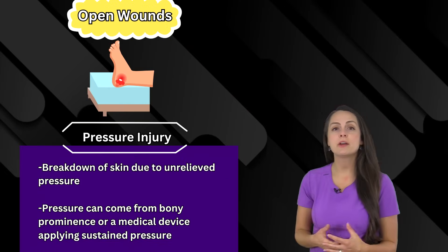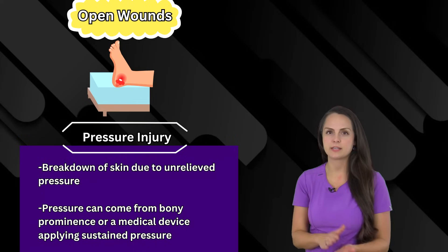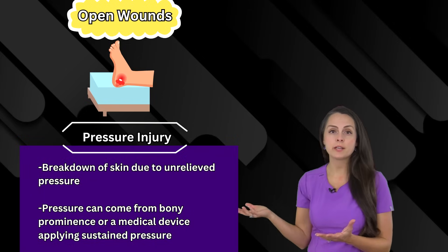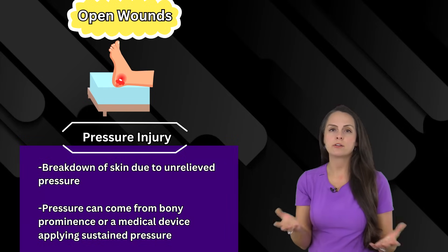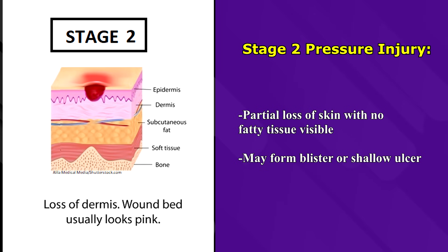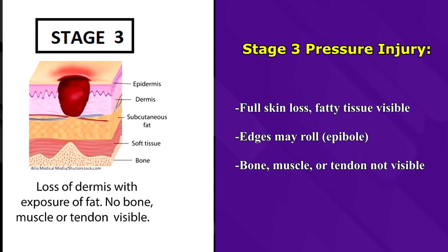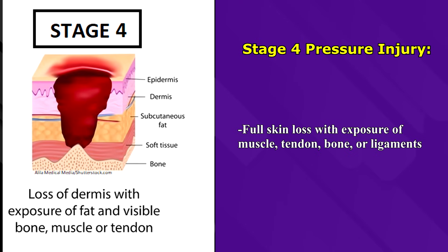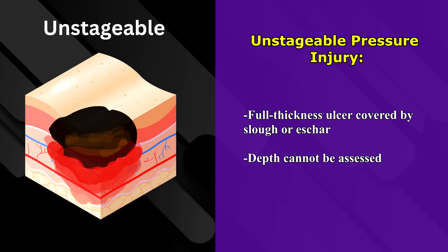Next we have pressure injuries, also known as pressure ulcers. These develop from unrelieved pressure on skin layers, either from a bony prominence hitting a hard surface or a medical device applying sustained pressure. Stage 1: skin is intact, red, and will not blanch when pressed. Stage 2: partial loss of skin with no fatty tissue visible, may form a blister or shallow ulcer. Stage 3: full skin loss with fatty tissue visible and possibly rolled edges, but no bone, muscle, or tendon visible. Stage 4: full skin loss exposing bone, muscle, tendon, or ligaments. Unstageable: a full-thickness ulcer covered by slough or eschar where depth cannot be assessed.